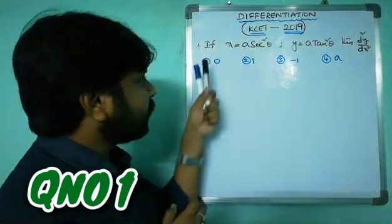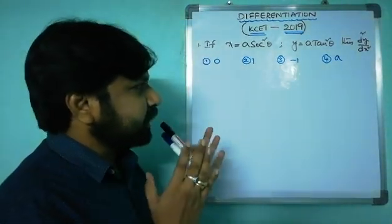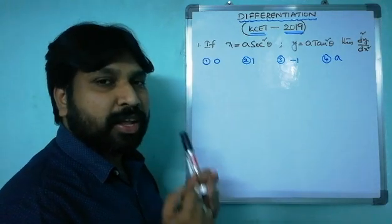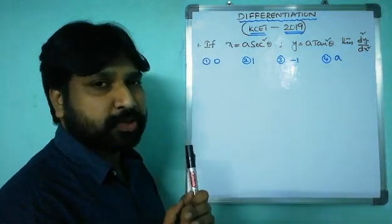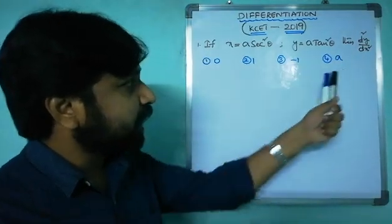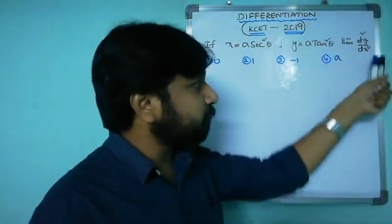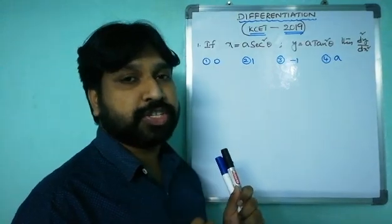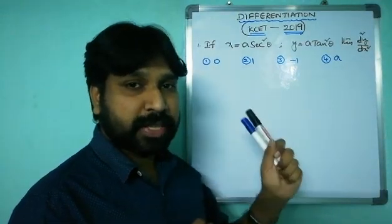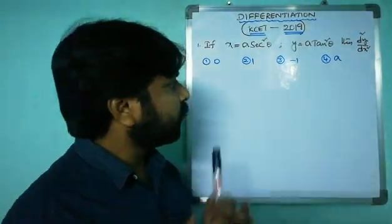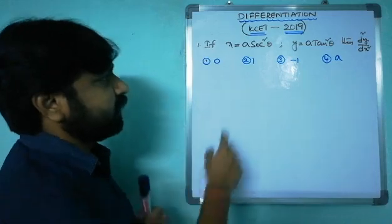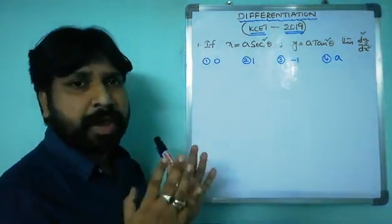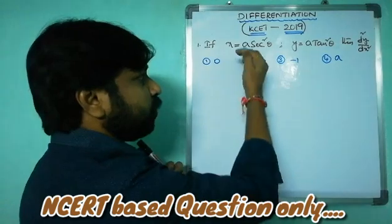Question number one: if x = a·sec²θ and y = a·tan²θ, then find d²y/dx². They are asking d²y/dx², so you have to apply differentiation two times. The strategy: x and y are given in terms of θ, so this is a parametric form.